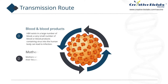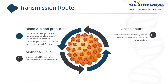Second, mother-to-child vertical transmission. Mothers with HBV can infect their fetuses through blood flow. Third, close contact and dissemination. It has been confirmed that saliva, sweat, vaginal secretions, semen, milk and other body fluids all contain hepatitis B virus.